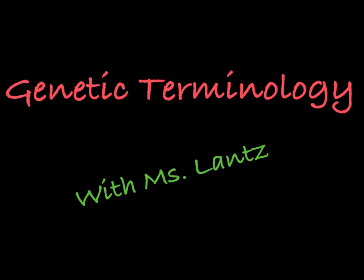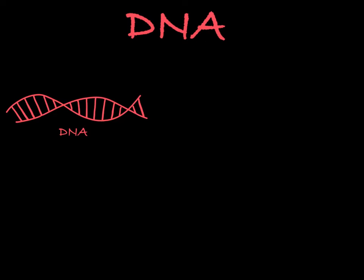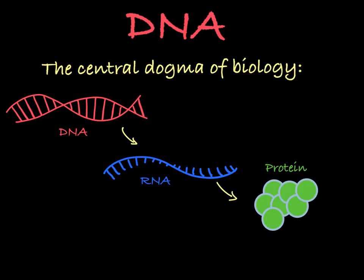In this video, I'll be introducing the basic terminology you need to study classical genetics. When we approach genetics, we have to go back to the starting point of what makes us who we are: the DNA. The central dogma of biology states that DNA codes for RNA, and RNA then codes for proteins, and these proteins influence an organism's traits.